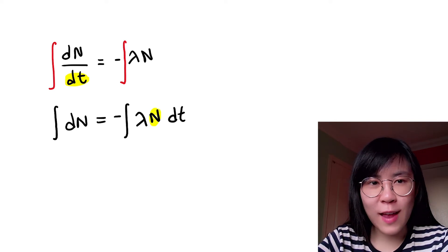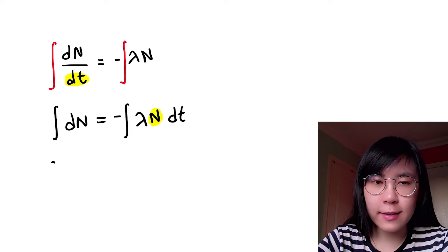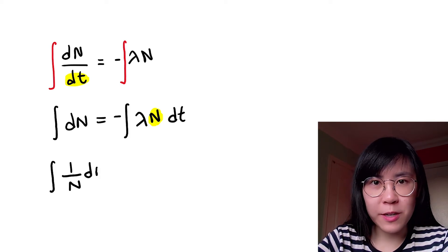And this N here needs to hang out on the left hand side with ΔN. So taking it to this side it becomes 1 over N.